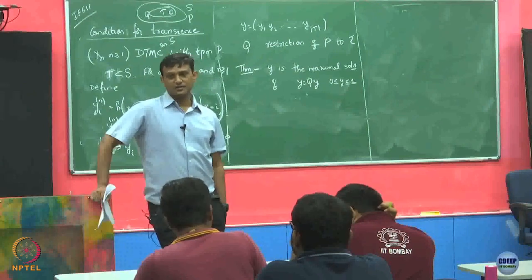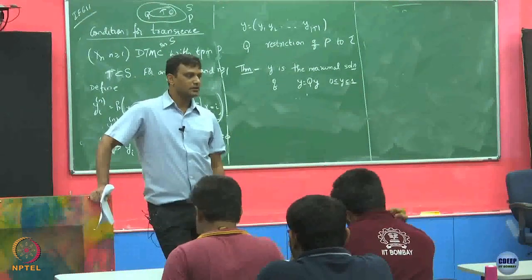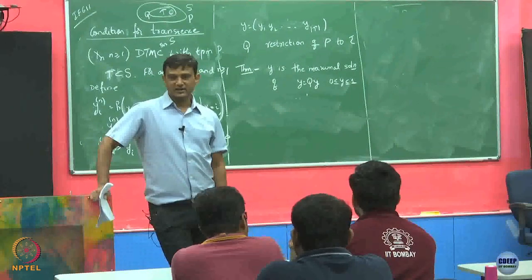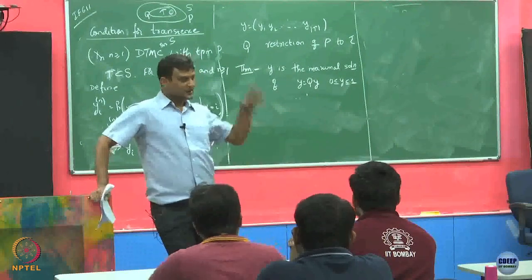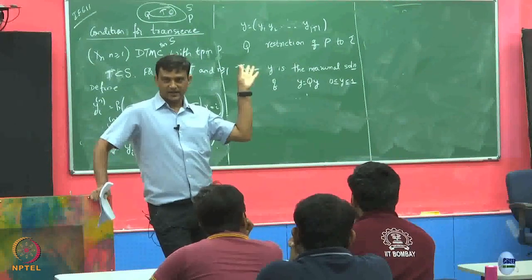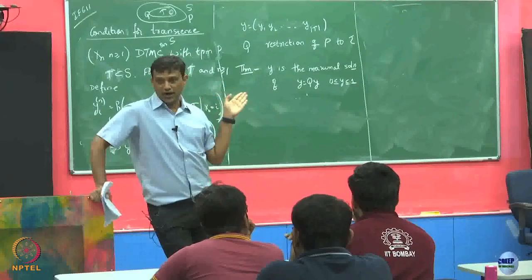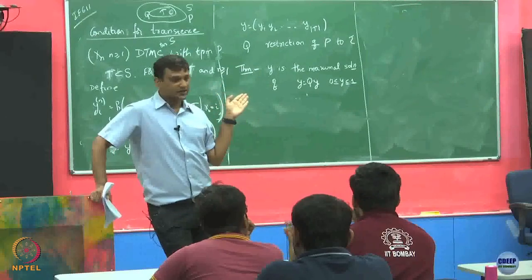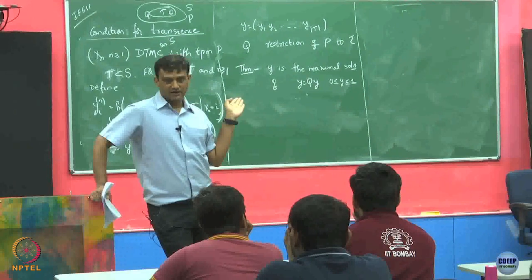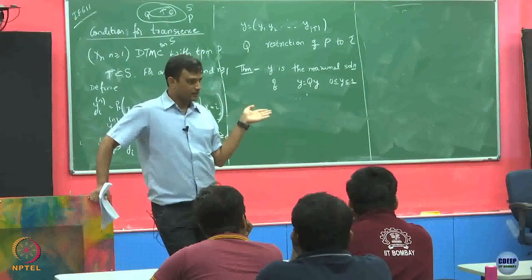When I looked at the solution pi equals pi*P, what was that? That is basically I was looking for a left eigenvector. When I am looking for a solution Y equals QY, what is this? It is a right eigenvector.